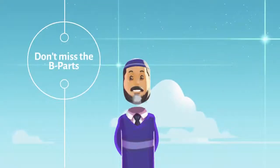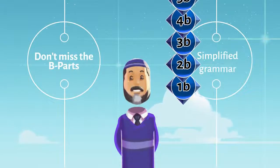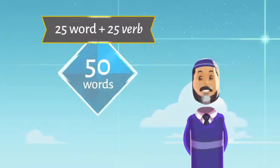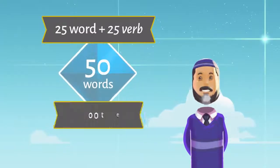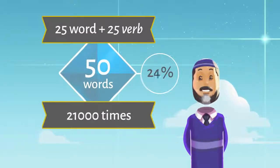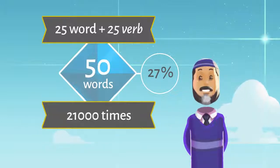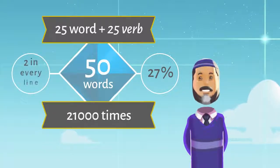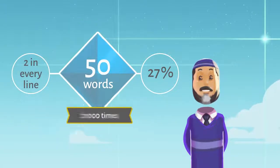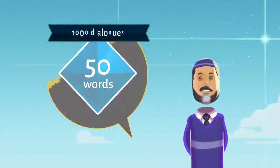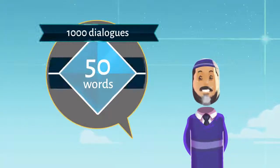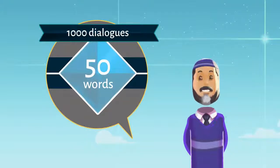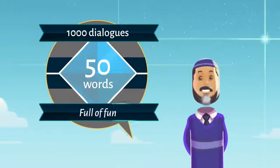So don't miss the B parts — that is 1B, 2B, 3B. You will learn 50 words that occur in the Quran 21,000 times — that is 27% of Quranic words, or 1 in 4 words, or 2 words in every line of the Quran. In addition to that, you will learn 1,000 dialogues of spoken Arabic based on these 50 words, to consolidate your learning of these different forms and make it full of fun.